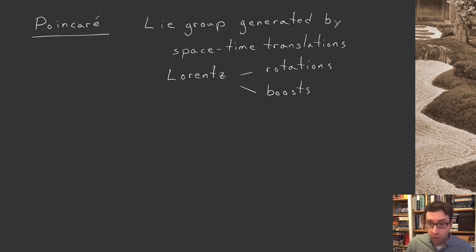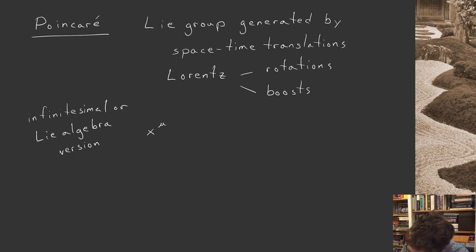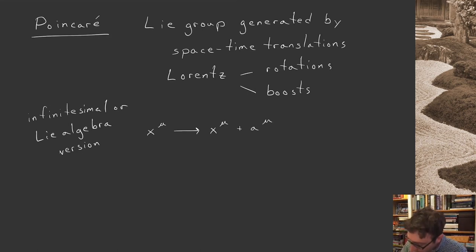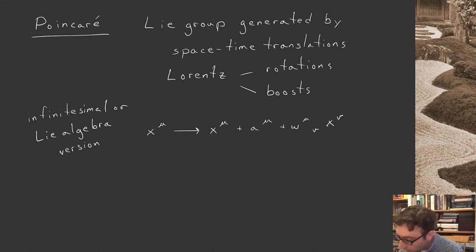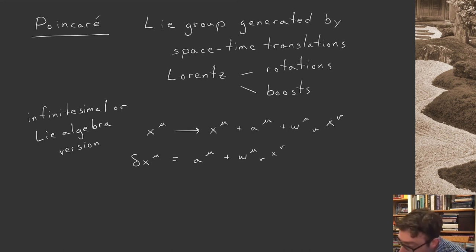These are very important for our understanding of the way the world works. Given a Lie group, you can consider infinitesimal elements — the Lie algebra elements that generate the action of the group. Under an infinitesimal element of Lorentz, a spacetime coordinate x^μ goes to a slightly shifted value, shifted by a small translation and a small rotation or boost given by the omega tensor with two indices.